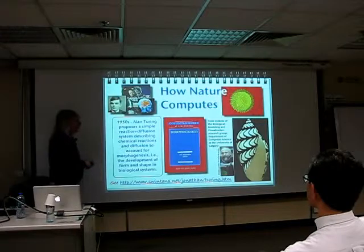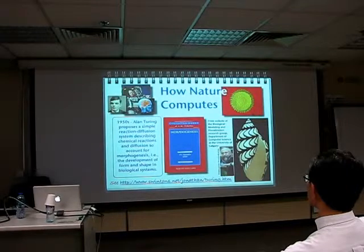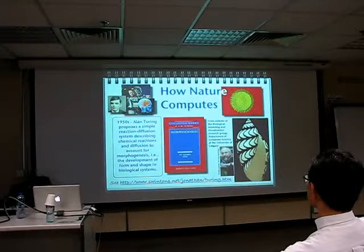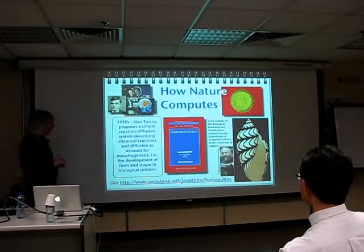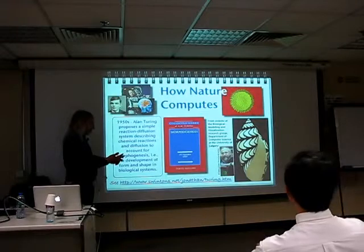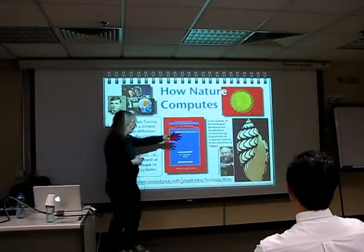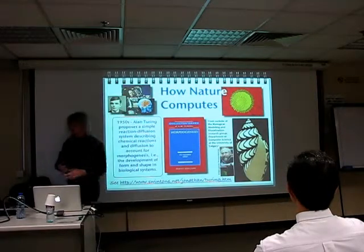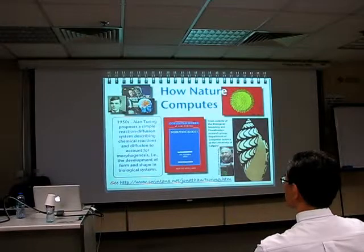Turing was very much involved with the real world after Bletchley Park. In a sense, he was railroaded into taking account of real-world computability at Bletchley Park. His world kind of changed after the war. He was interested in artificial intelligence, building computers. We walk around and we see patterns in nature and never have a second thought about it — unless you're Turing.